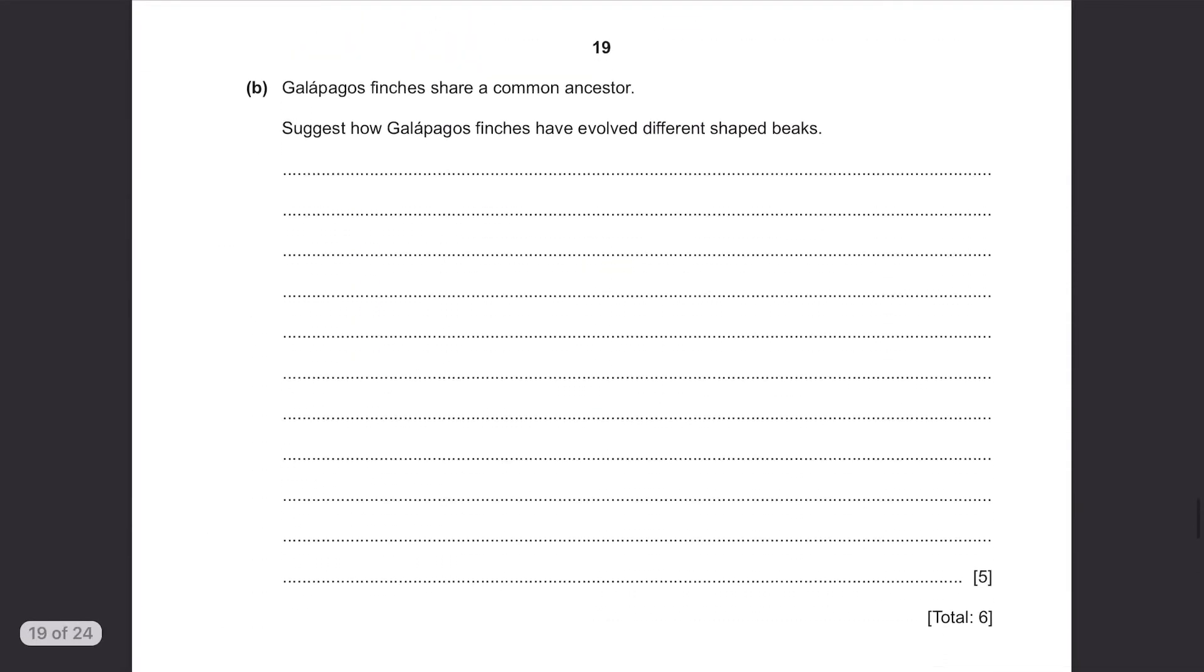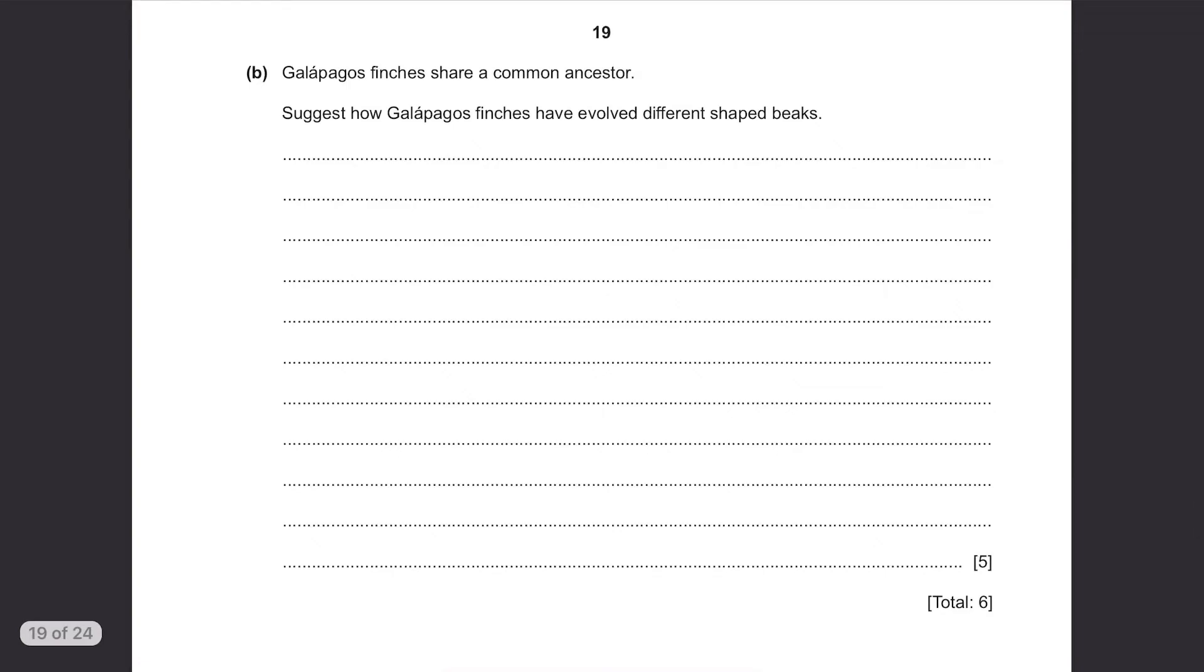Part B. Galapagos finches share a common ancestor. Suggest how Galapagos finches have evolved different shaped beaks. We don't have to explain how the beaks differ from each other and all that, we actually just need to explain why they have evolved different shaped beaks.